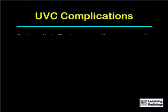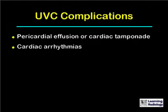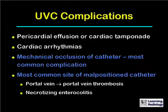There are numerous complications to umbilical venous catheters, among which are pericardial effusion or cardiac tamponade, cardiac arrhythmias, and mechanical occlusion of the catheter, which is the most common complication. The most common site of malpositioning is in the portal vein, which can rarely lead to portal vein thrombosis and necrotizing enterocolitis.